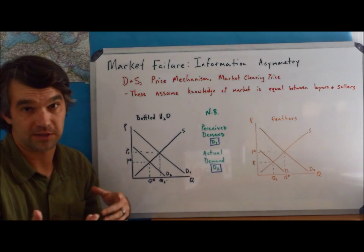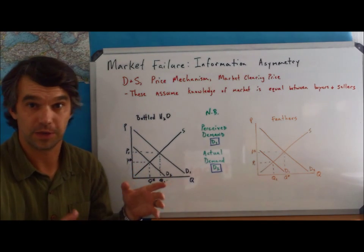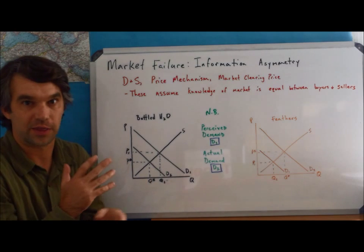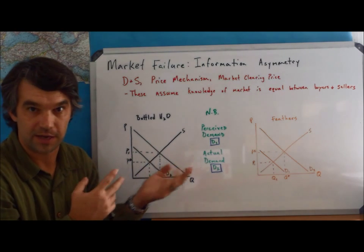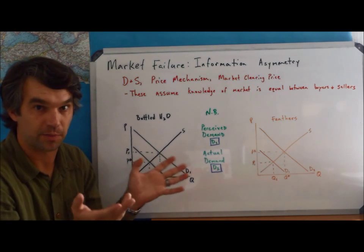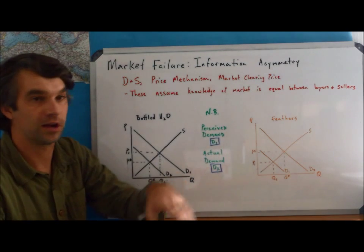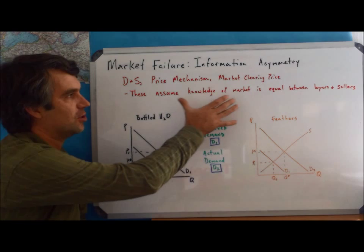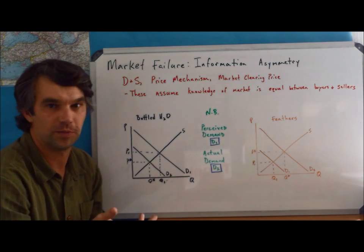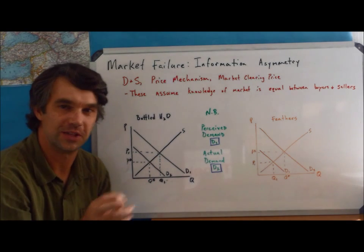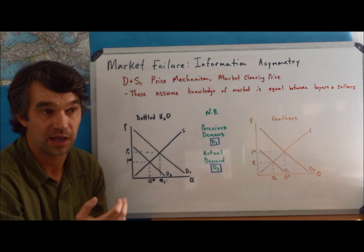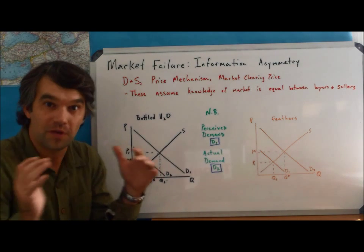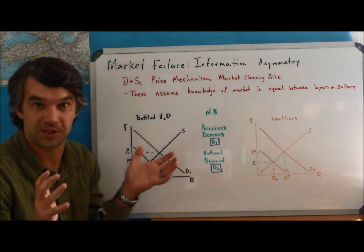All these theories - demand and supply, price mechanism, demand and supply working together, excess demand and supply being eliminated by the market, the market clearing price meaning equilibrium - all those ideas assume that knowledge of the market is equal between those people who are buying the goods and those people who are producing the goods. It also assumes that they know everything about the market in which they're operating.